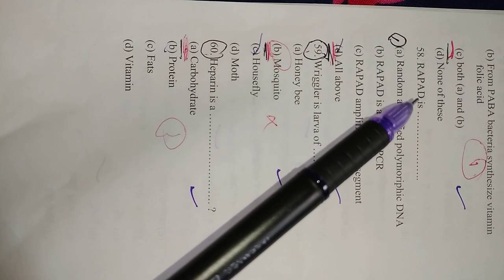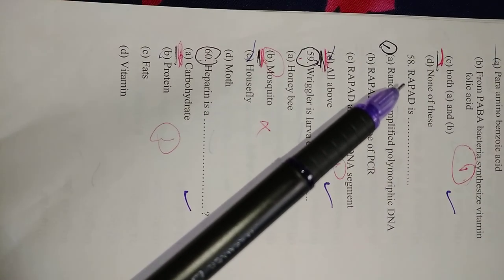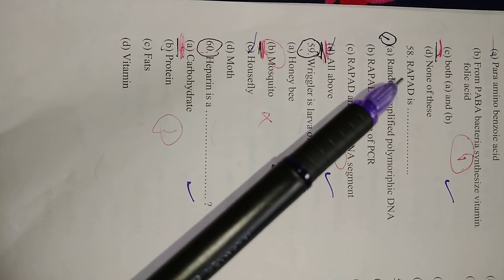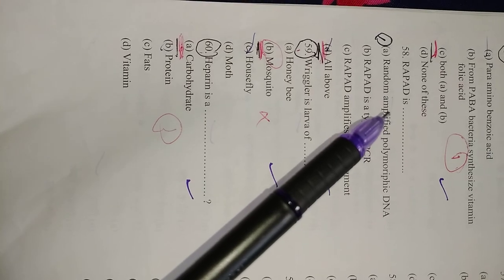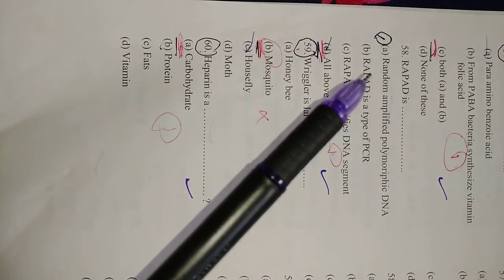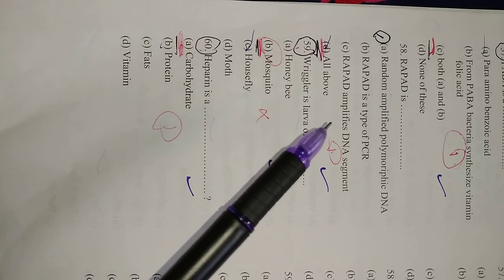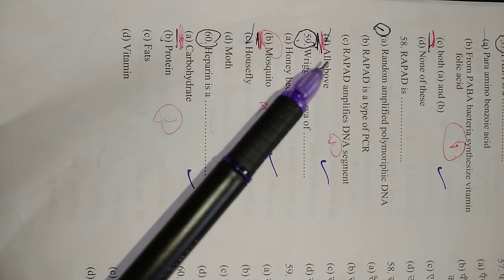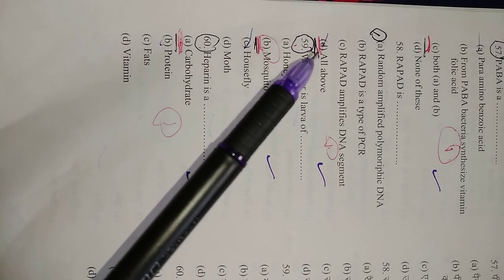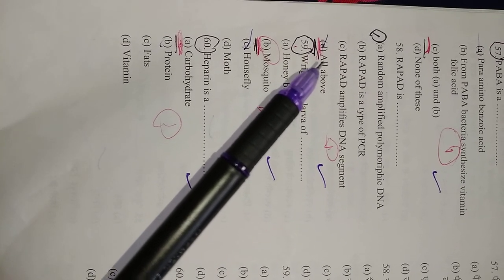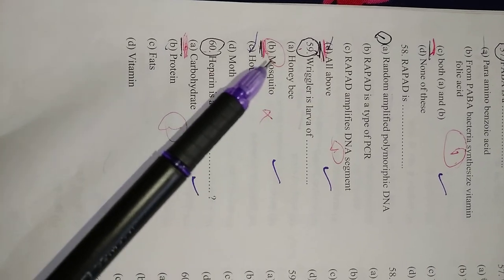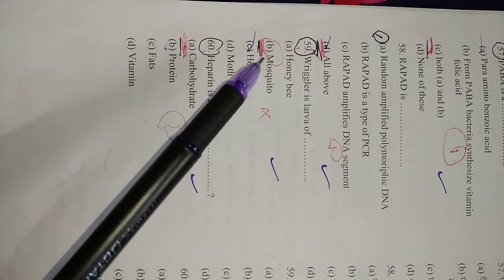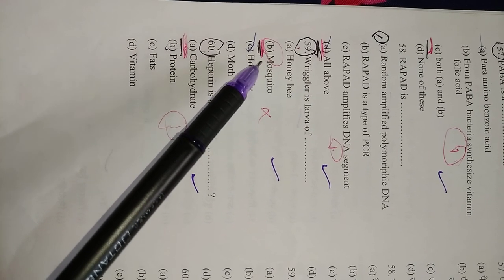Question number 58: RAPD—the full form of RAPD is Random Amplified Polymorphic DNA, and it is a type of PCR and is used for the amplification of DNA, short segment of DNA. So right option is all above, so option D is correct. RAPD is all of these. Question number 59: Wriggler is the larva of mosquito. So right option is B, mosquito.